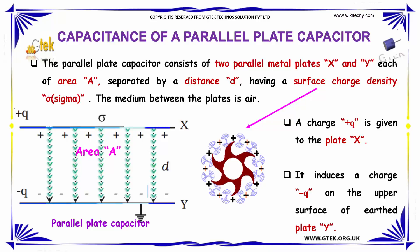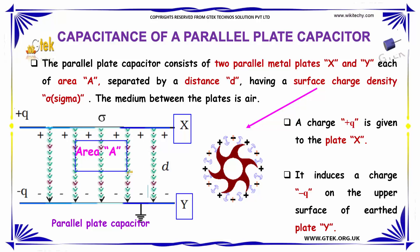Now let's discuss the capacitance of a parallel plate capacitor. The parallel plate capacitor consists of two parallel metal plates, X and Y, each of area A, separated by a distance d, having a surface charge density σ. The medium between the plates is air.